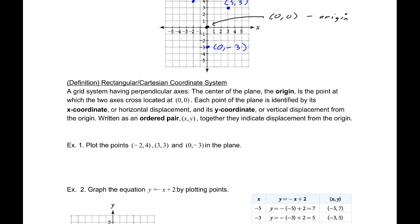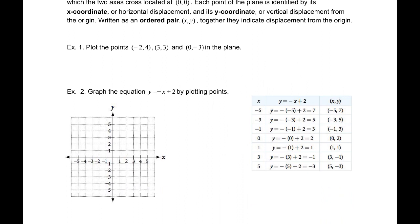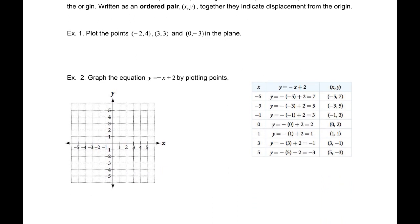Next, graph the equation y = -x + 2 by plotting points. So I've actually already put together a table over here. This is actually from the textbook. If the x value is -5, then the y value, by evaluating this, is found to be 7. So (-5, 7) is a coordinate on this graph.